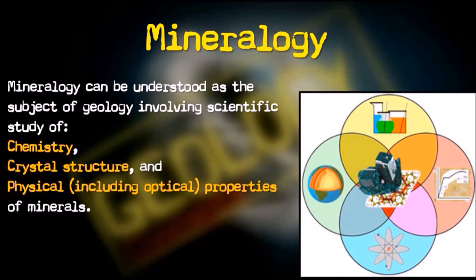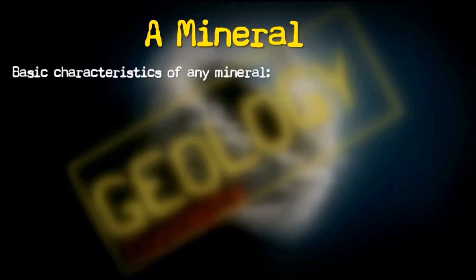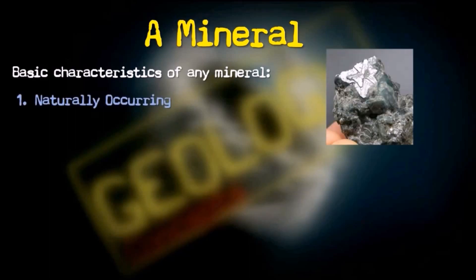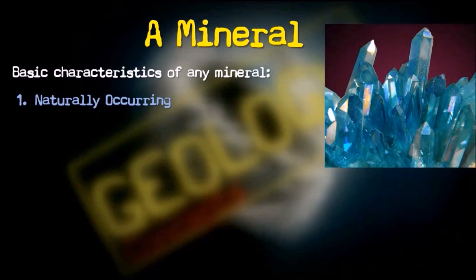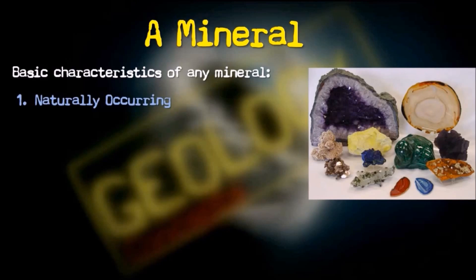Before going into details in other videos, let's start with some definitions. A mineral has some basic characteristics. The first characteristic is that it is a naturally occurring product — all minerals must have formed in nature. An inorganic solid compound that has a specific chemical composition but is synthesized in a lab is not a mineral; it must be naturally occurring. The second property is that it should be inorganic in nature.